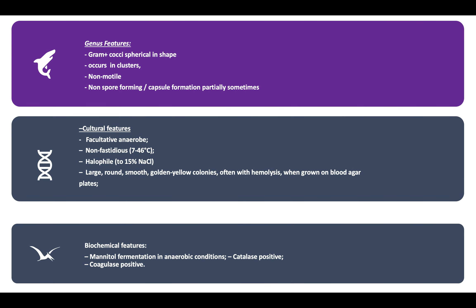Now, the morphological features — this is the most important slide in the whole video. The genus features include: gram-positive cocci in a spherical shape, they usually occur in grape-like clusters, they're non-motile so they do not move under the microscope, they're non-spore forming, and rarely they can form capsules.